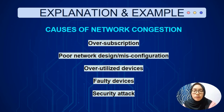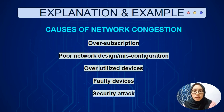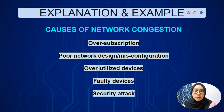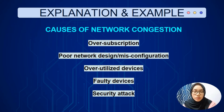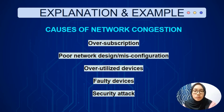The third cause is over-utilized device. This situation occurs where a device is operating at the capacity it was designed for. The fourth one is faulty device. This occurs when a device does not support a higher link capacity. For example, an organization buys a link capacity of 100 Mbps but the device can only provide 30 Mbps of network. The last one is security attack. Security attacks consist of viruses, worms, and DoS attacks.